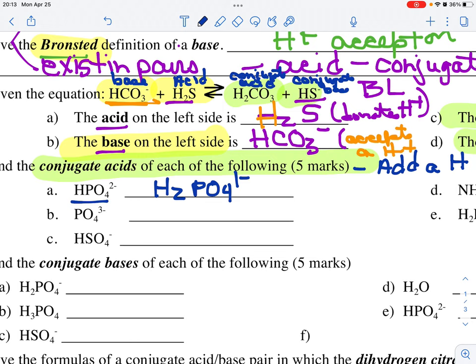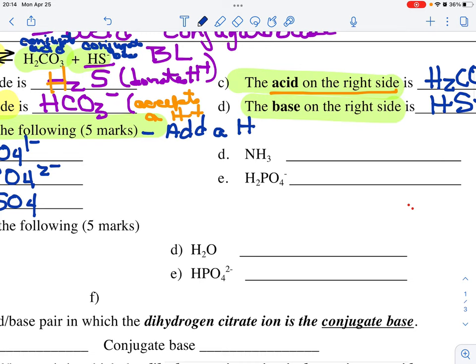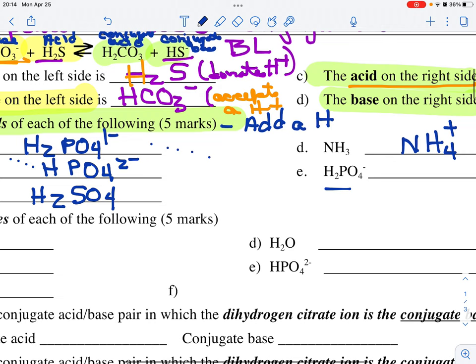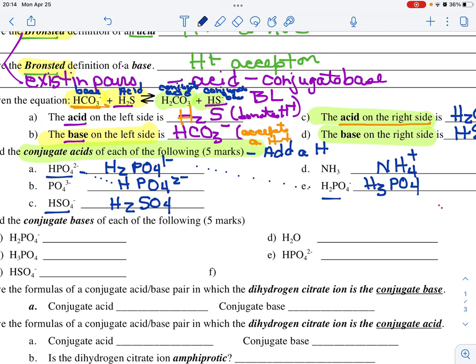And that will now have a 1 minus charge. So that'll be the dihydrogen phosphate ion. Next, let's do B, PO4 3-. Let's add one hydrogen. Oh, look, it becomes this one. How interesting. Now, let's add a hydrogen to HSO4. And we'll get H2SO4, sulfuric acid. Two left. Let's add a hydrogen. The ammonia will become ammonium. And finally, my dihydrogen phosphate will become phosphoric acid when I add.